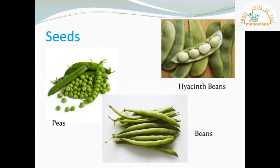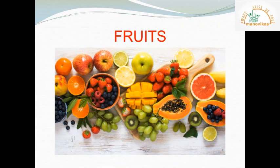Peas and beans are seeds that are eaten as vegetables. There are many kinds of fruits. Most fruits have seeds in them. Fruits are sweet, juicy and tasty. They are also healthy foods and protect us from many diseases. Let us learn more about fruits.